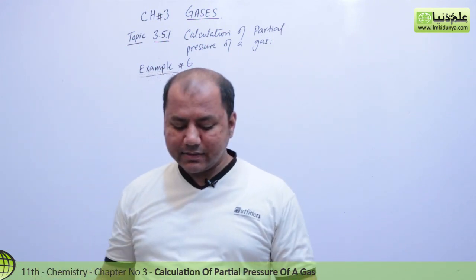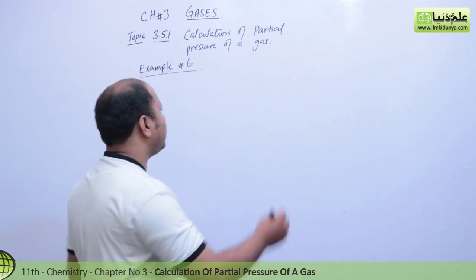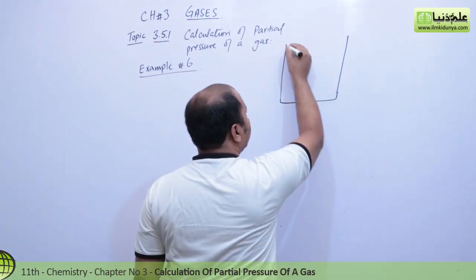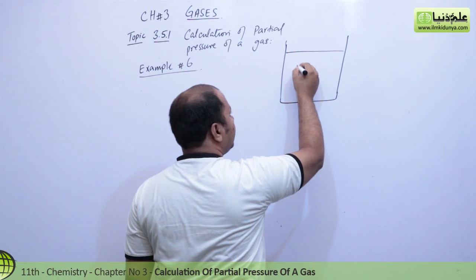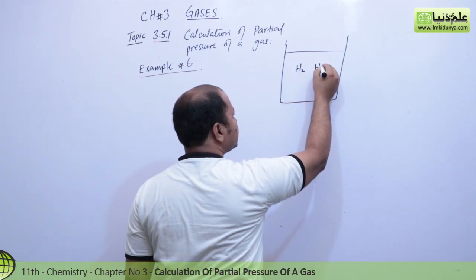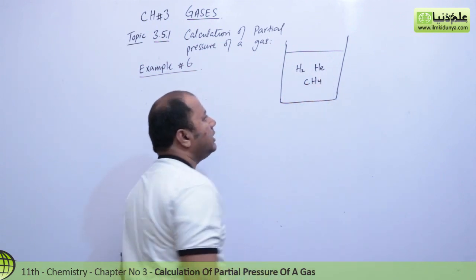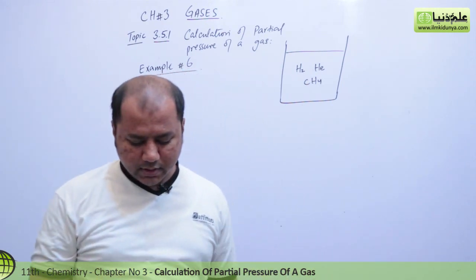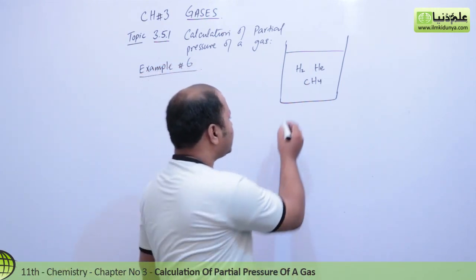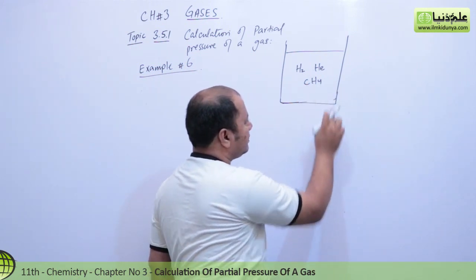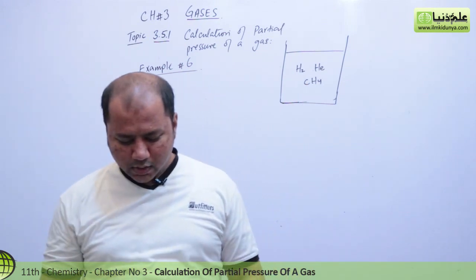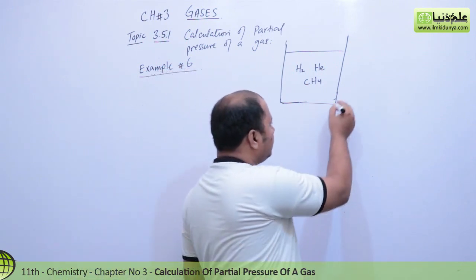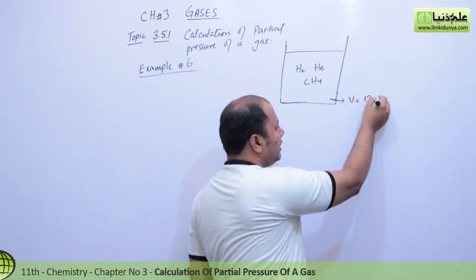They are saying there's a mixture of gases — hydrogen, helium, and methane — inside a cylinder. We have a vessel, and I'll just draw it as a cylinder for you. The total volume of this vessel is 13 dm³.